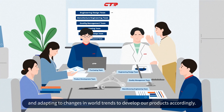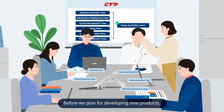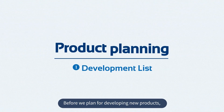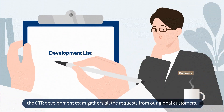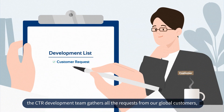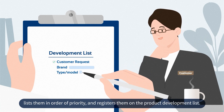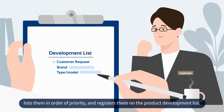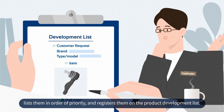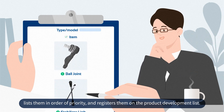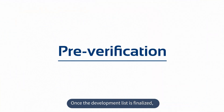Before we plan for developing new products, the CTR development team gathers all the requests from our global customers, lists them in order of priority, and registers them on the product development list. Once the development list is finalized, we check the specs and search for related data for the genuine product.